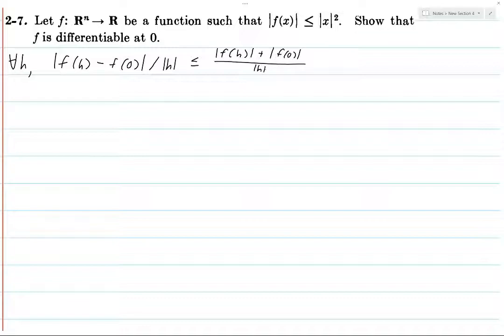But now we can use that inequality that we have from the problem statement. So, this is of course going to be equal to, we can break up the fraction in two, f zero over h here, and now this is going to be less than or equal to, now we use the inequality from the problem statement, so we get h squared over h plus the norm of zero squared over h, and what is this?